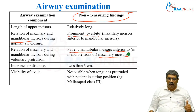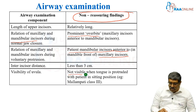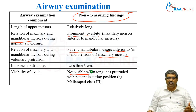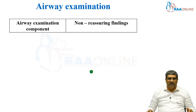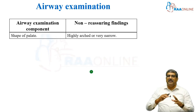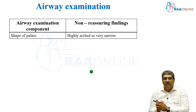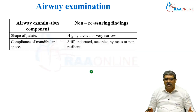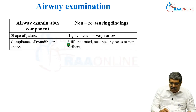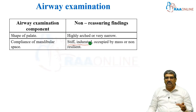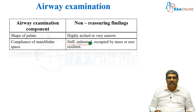Visibility of the uvula — when the uvula is not visible when the tongue is protruded, for example in Mallampati 3 or 4, it is a non-reassuring finding. Shape of the palate — either a highly arched or a very narrow palate is not good. Compliance of the mandibular space — if the mandibular space is stiff, indurated, occupied by a mass, or non-resilient, it is very difficult.